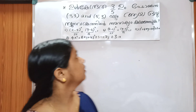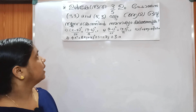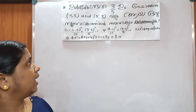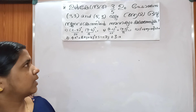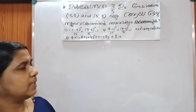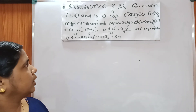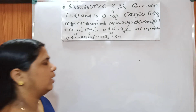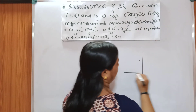Question number 1. The eccentricity is 3 by 5. The foci are minus 1, 3 and 5, 3. We will find the equation for the ellipse.